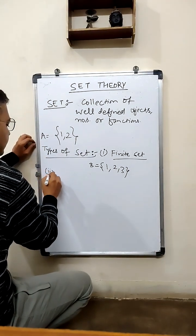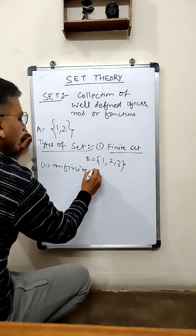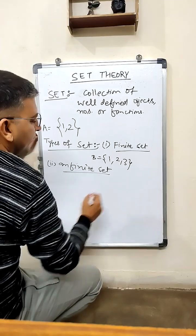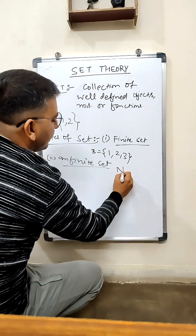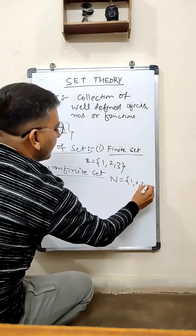Next is infinite set. So what is an infinite set? The set of infinite number of elements is known as infinite set. For example, the set of natural numbers: {1, 2, 3, and so on} has infinite number of elements.